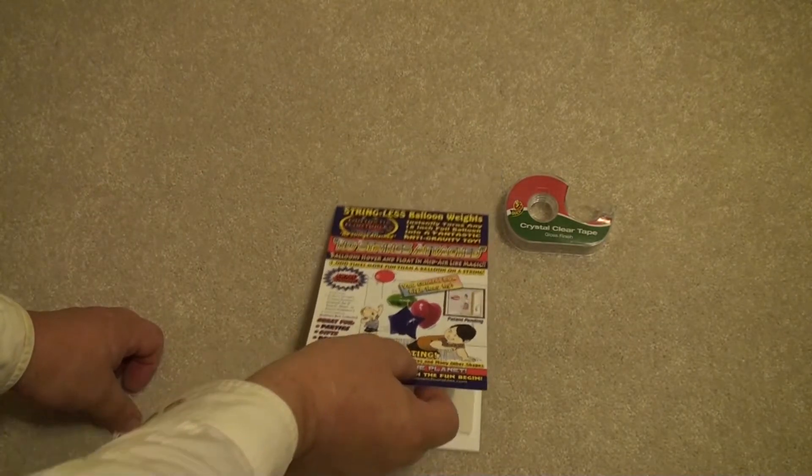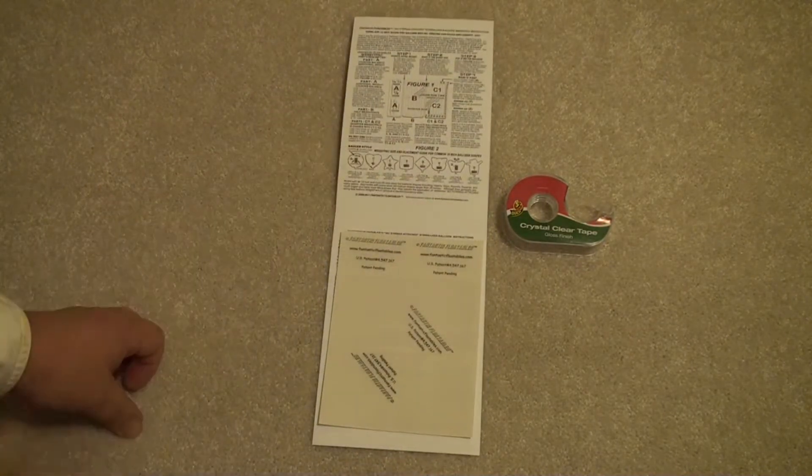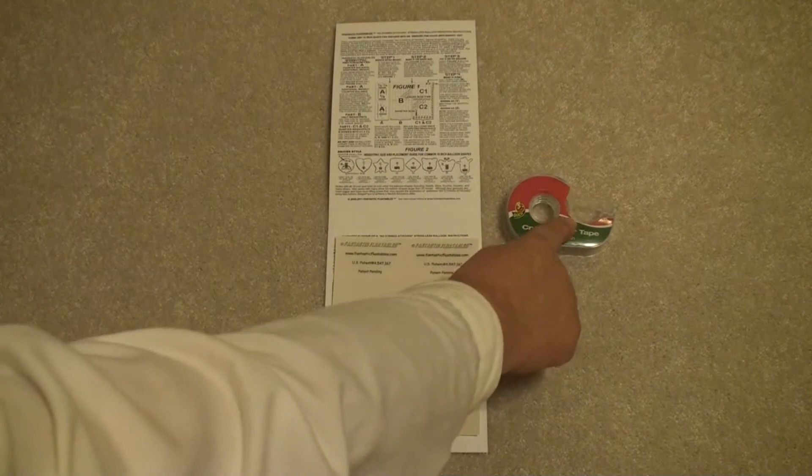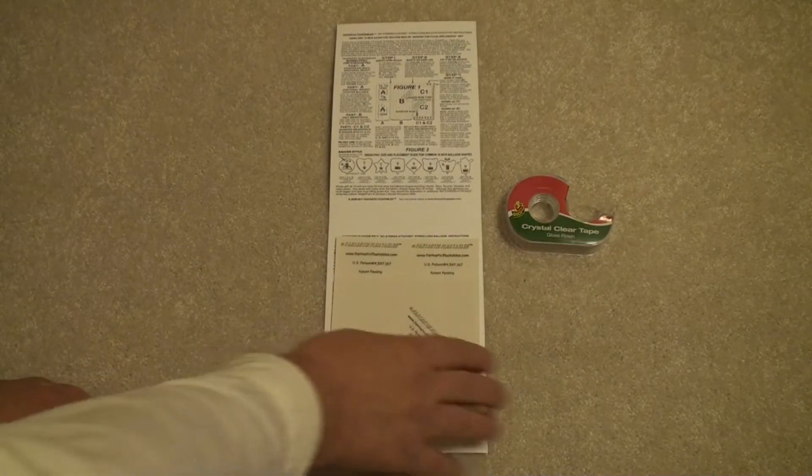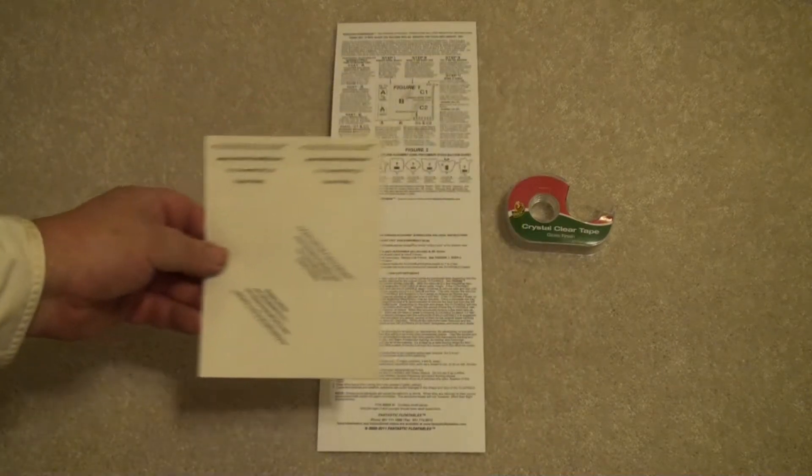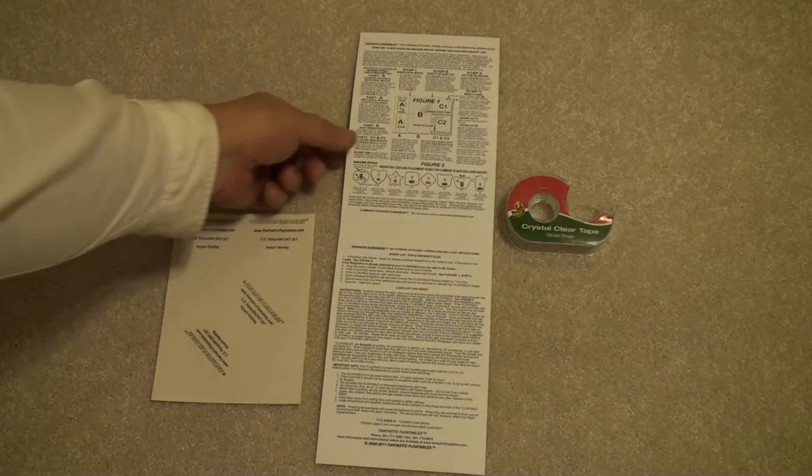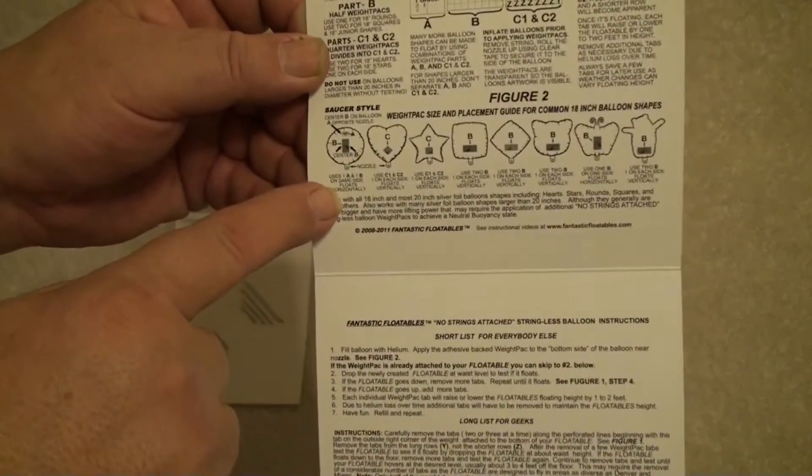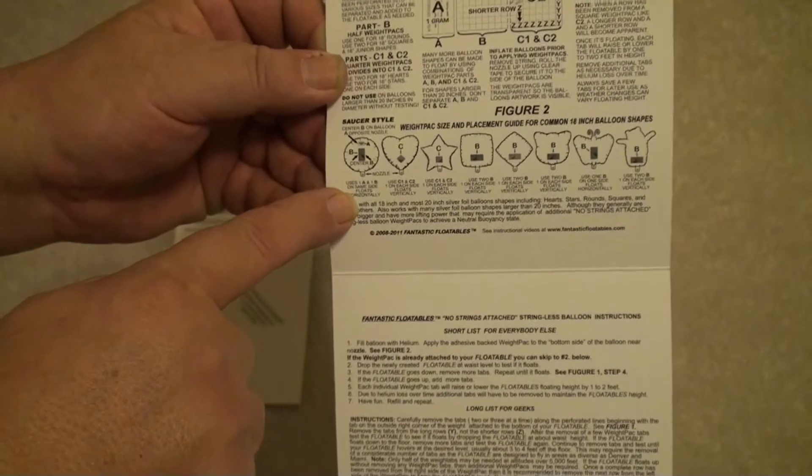What you need is our balloon weight and cellophane tape. Inside our package comes the weights for the balloons. You can make two 18-inch balloons float with that, and it comes with instructions showing how to put it on different types of balloons, but we're interested in the flying saucer style that we've pointed out right there.